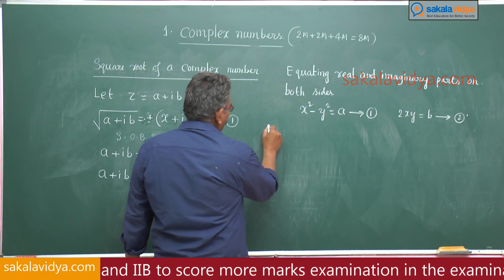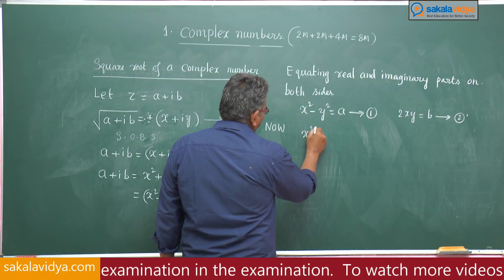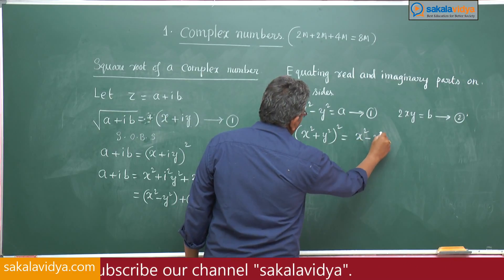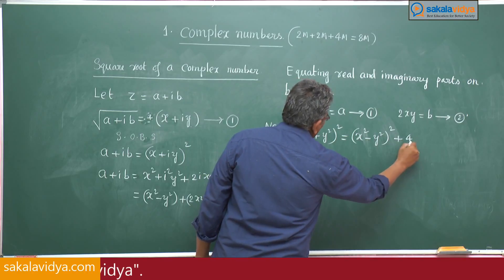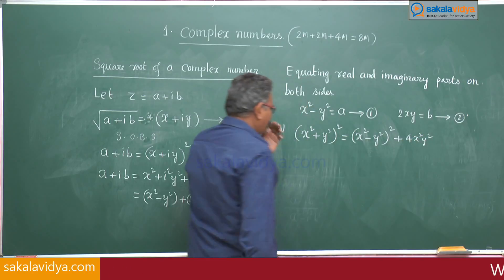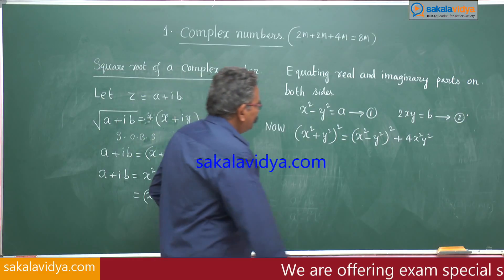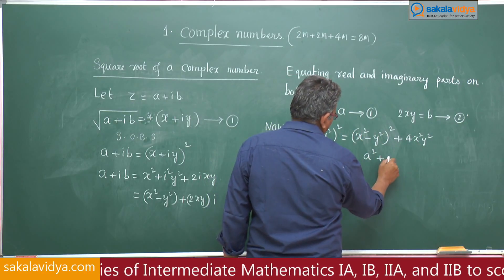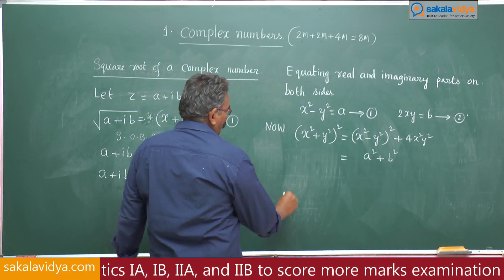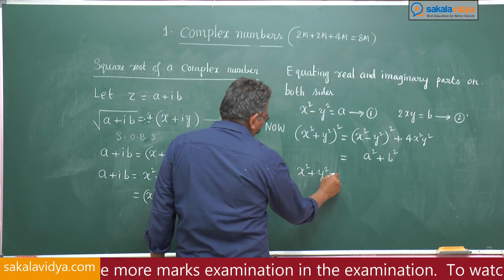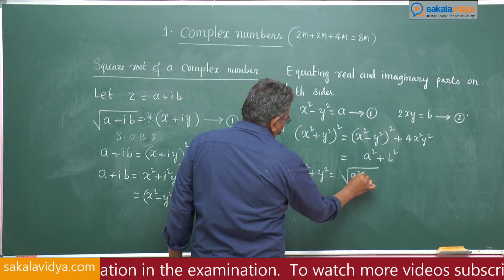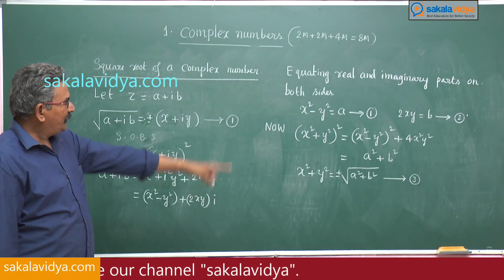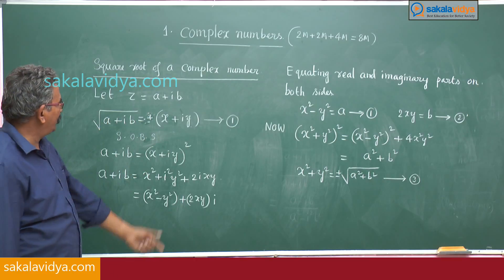Now consider one algebraic identity: (x² plus y²)² equals (x² minus y²)² plus 4x²y². This is nothing but a² plus b². Therefore, x² plus y² equals root over a² plus b² — take this as equation 3. If we solve equations 1 and 3, we get the values of x and y.